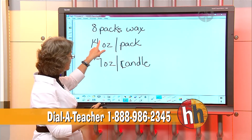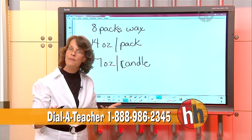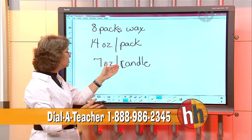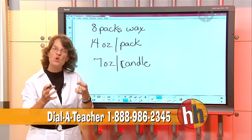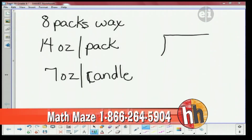So let's first figure out: out of the 14 ounces in each pack, how many candles can we get out of 14 ounces? If we need seven, what are we going to do with the 14 and the seven? Divide them. So which one goes inside the divisor? 14 goes inside and the outside is the seven. So how many sevens are in 14? Two.